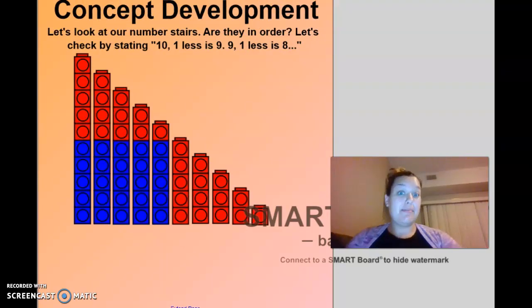We have these number stairs here now, just like what we did a minute ago, but they are in order from ten all the way to one. Do you think you can help me count from ten all the way down to one? I know you can count backwards, but do you think you can help me by saying a number is one less than another? Let's see how many we're starting with. One, two, three, four, five, six, seven, eight, nine, ten.